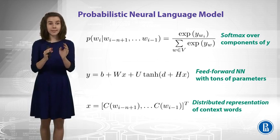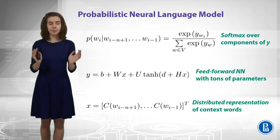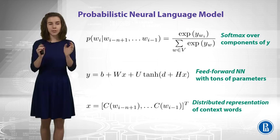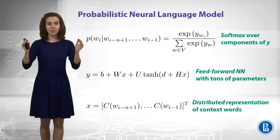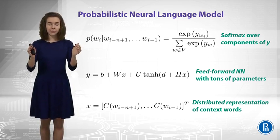So, what is X? X is the representation of our context. You remember our C matrix, which is just distributed representation of words. So, you take the representations of all the words in your context, and you concatenate them. And you get X.